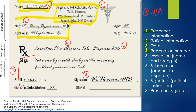Number four listed is the prescription number. In this case it's not listed, but if you work in a compounding pharmacy, you might have a prescription number listed in this corner.